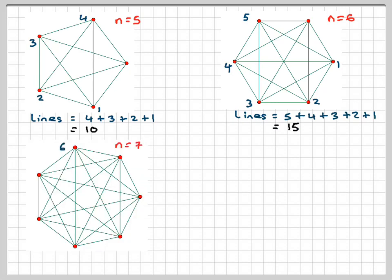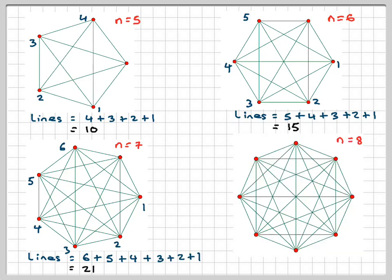And N equals 7, same idea, just add six to this one. Six, five, four, three, two, one. By the time you've got to count this one, you've counted all the lines. The lines will be 6 plus 5 plus 4 plus 3 plus 2 plus 1, which is 21. And the case given,